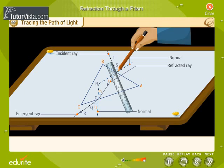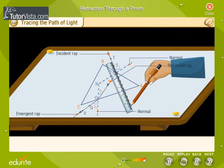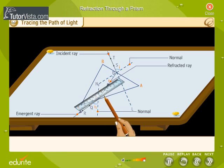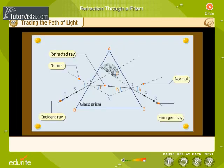If the incident ray TP is extended forward and the emergent ray RO backwards, they meet at M, forming the angle OML. Measure the angle OML. This angle is called the angle of deviation.